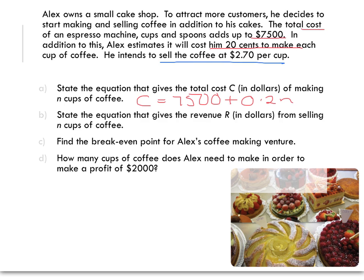For part B, we're then asked to state an equation for our revenue of selling n cups of coffee. Again, from the information above, we've got a revenue, R, of $2.70 per cup. So, R = 2.7n.